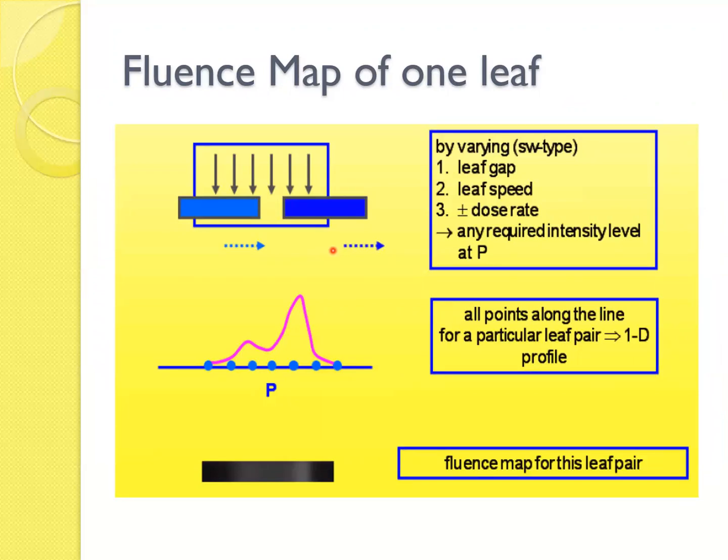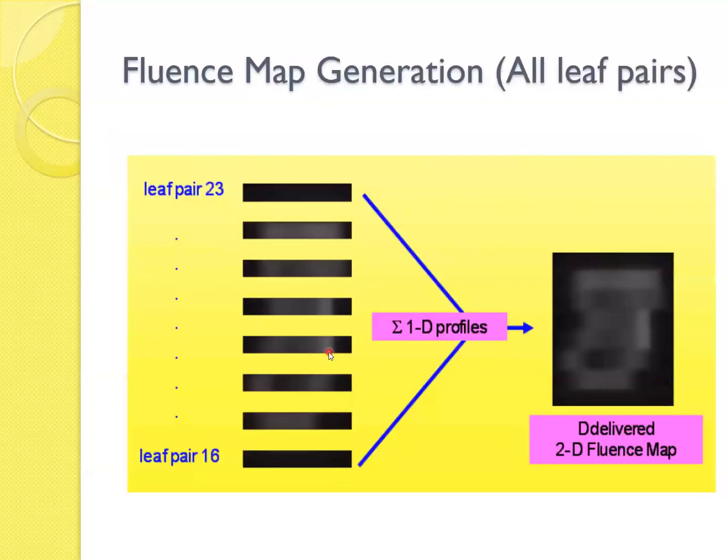And this is another visual example of how the frequency is generated, how the MLCs are moving from one end to the other end. So by varying the sweep type, the leaf gap, leaf speed, dose rate, all are very important to consider. And also for the quality assurance, these need to be considered. There are AAPM guidelines available for the MLC QA. All going along the line for the particular leaf pair and the 1D profile. And lens map for this leaf pair and the film. And this is 1D profile converted into 2D profile.